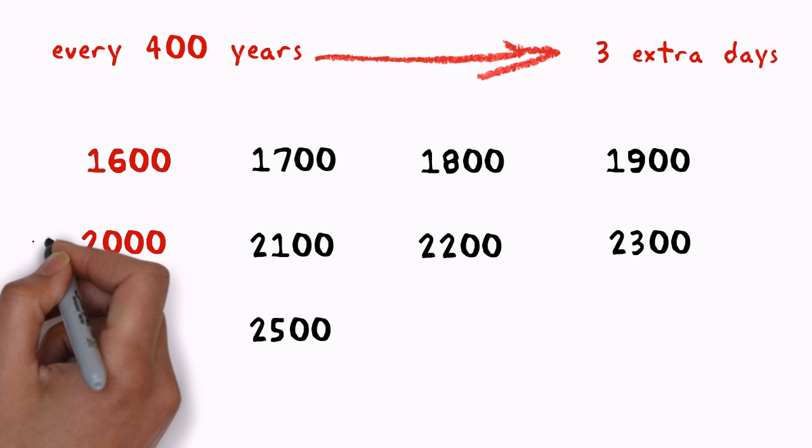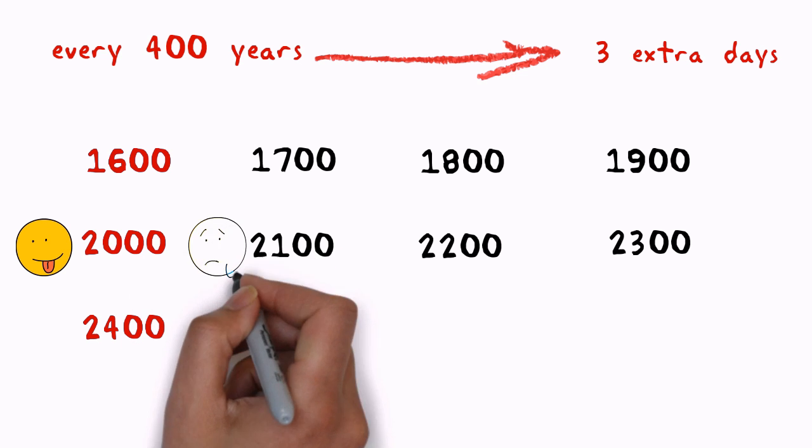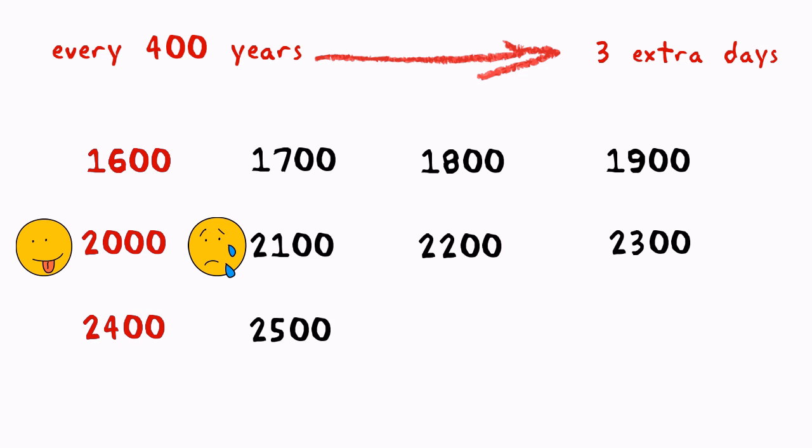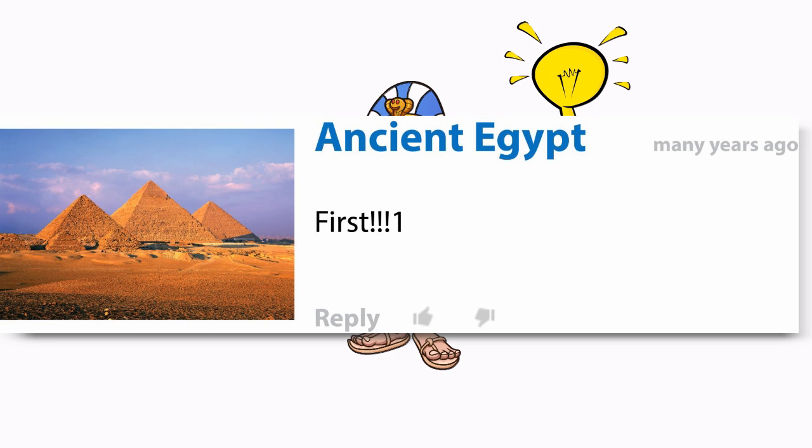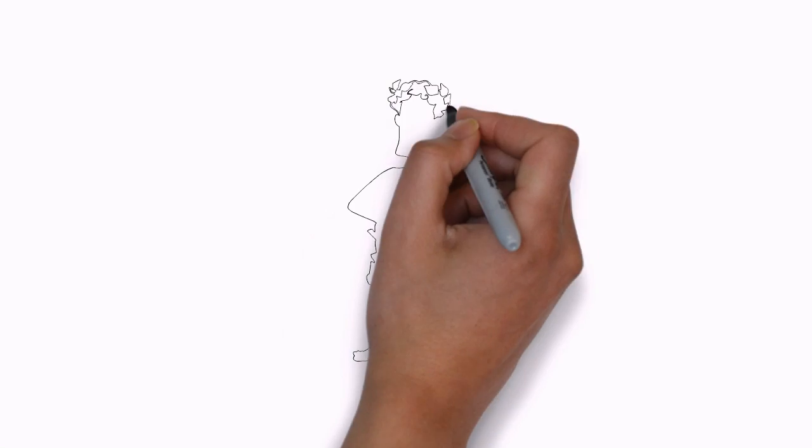This means that the year 2000 was a leap year, but 2100 will not be. So who figured all this out? The Egyptians were the first people to think of adding a leap day to the calendar every four years. Later, the Romans copied the idea.